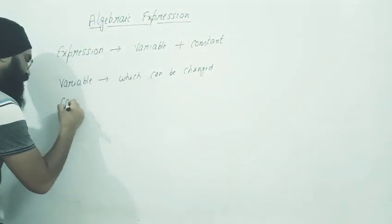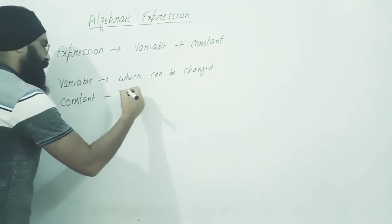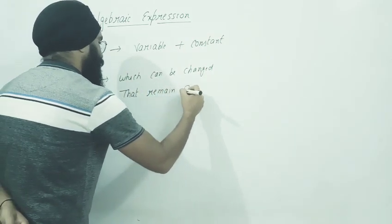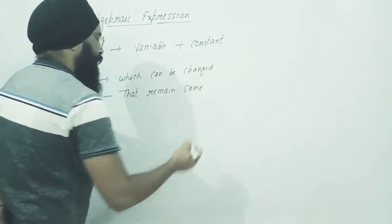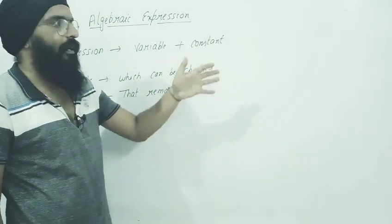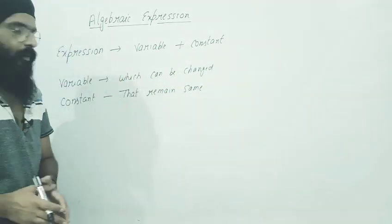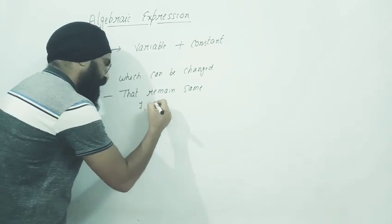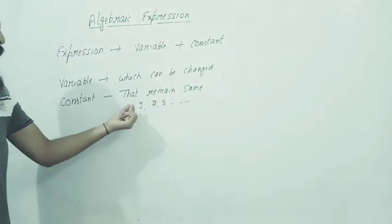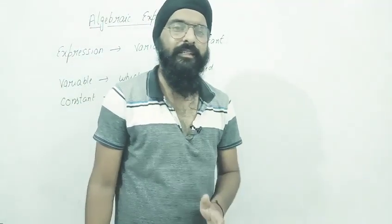Now after that comes constant. Constant means that remain constant, that remain same. Which remains same. Like this board - it will remain here, it will stay here, no matter which year. This is a constant. Constant means one, two, three - these all are constant. The value of one will remain same throughout the world. Wherever you go, the value of one will remain same.